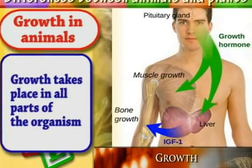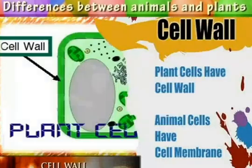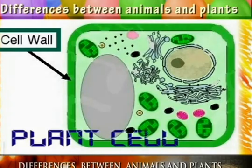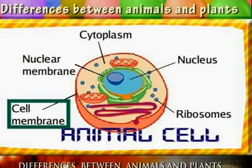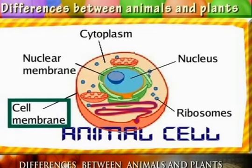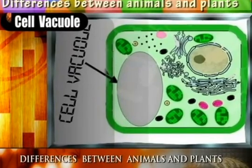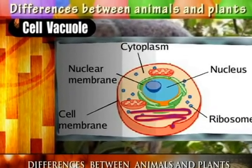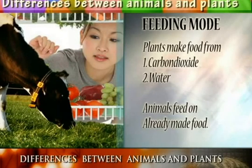Another difference is the presence of the cell wall. Cells of plants have a cell wall whereas the cells of animals lack a cell wall. Also, inside the cells of plants there is a large vacuole, which is lacking in the animal cells.